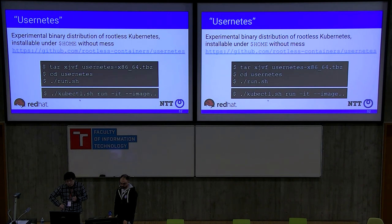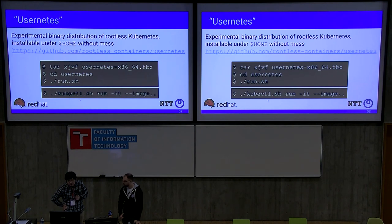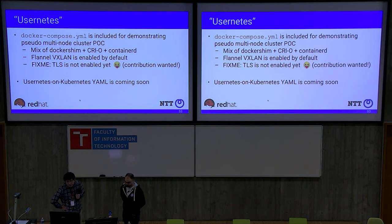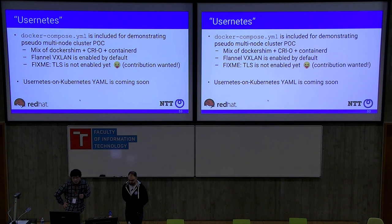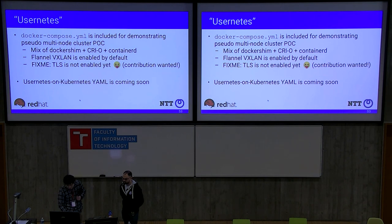We provide usernetes, an experimental binary distribution of rootless Kubernetes that can be installed under the home directory. Just download the binary archive from GitHub and run run.sh — you can form a single-node cluster with just that script and use kubectl. We also provide a docker-compose YAML for demonstrating a multi-node cluster composed of multiple nodes. It is configured with a default CNI plugin but this YAML is just a proof of concept — we need contributions, and we are also planning to provide a YAML for deploying on an existing Kubernetes cluster.